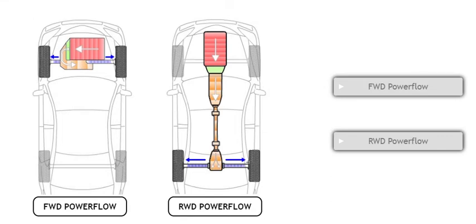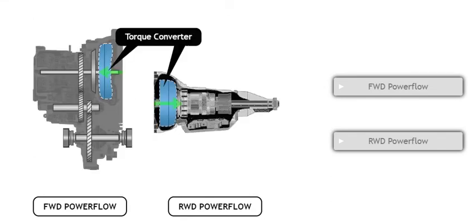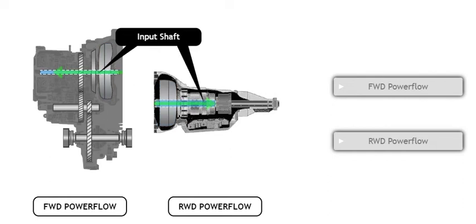Let's look at power flow within a transmission. Power enters the transmission via the torque converter, which transfers the power to the input shaft. At this point, some of the power is also used to drive the fluid pump.